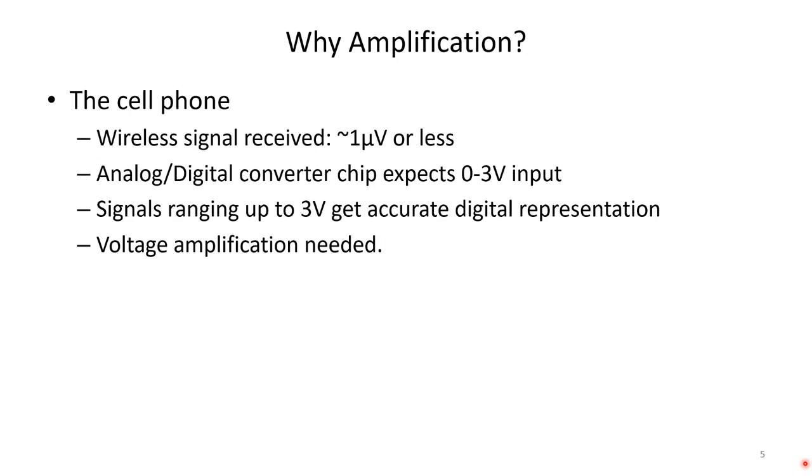Another case, a cell phone. A wireless signal is received at typically less than one microvolt. An A to D converter chip, to take that analog signal and convert it to digital, expects a zero to three volt input. Signals ranging up to three volts get accurate digital representation. So we need to take that antenna signal from your cell phone and voltage amplify it, or increase the amplitude of the voltage of that signal.